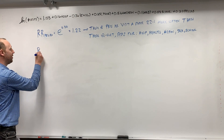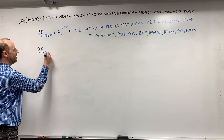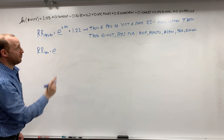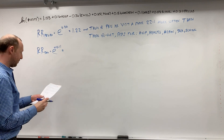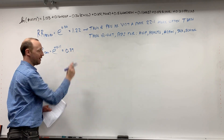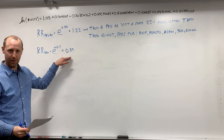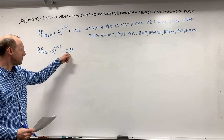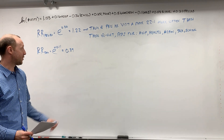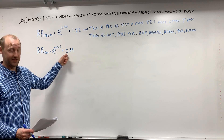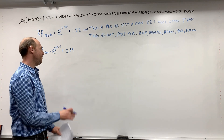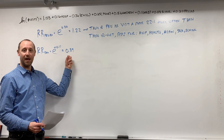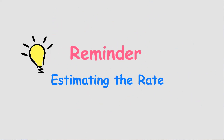For biological sex, exponentiating the coefficient of −0.11 gives 0.89. We can say that males visit a physician 11 percent fewer times than females, or equivalently, males visit a physician 89 percent as often as females, adjusting for the other variables in the model.